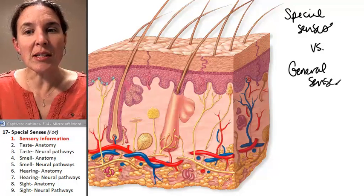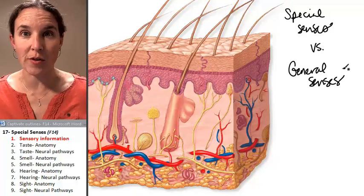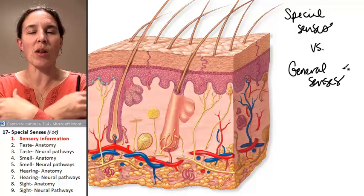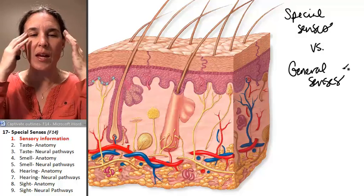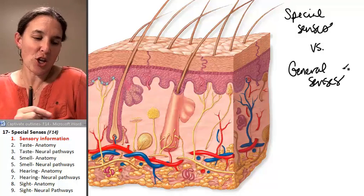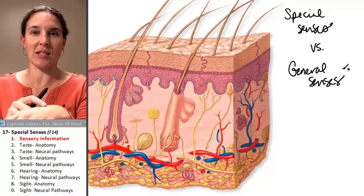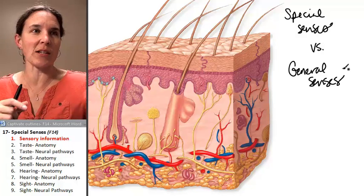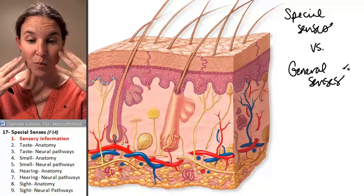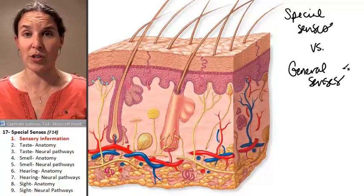General senses are not specific — they're all over. Touch is a good example of a general sense. It's everywhere. You don't have a specific touch zone; you can actually feel pressure and contact all over your skin.